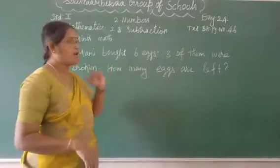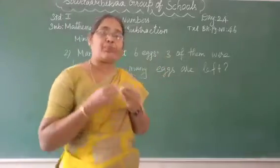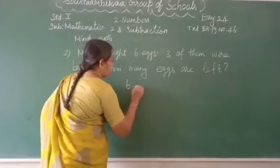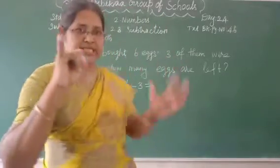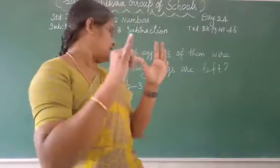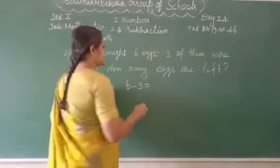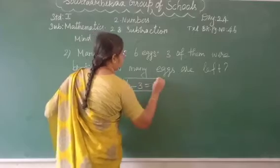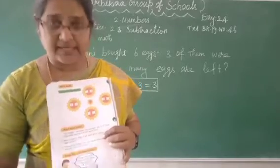Money bought how many eggs? Six. Three of them were broken. Three are broken. So, minus three. How many eggs are left? Six fingers, fold three fingers: 1, 2, 3. Leftover 1, 2, 3. Six minus three equal to three. Write this neatly. Next.